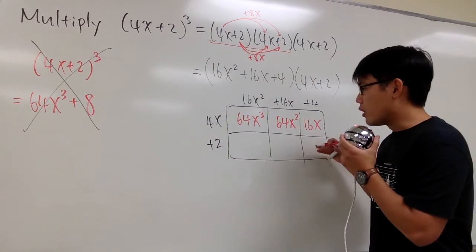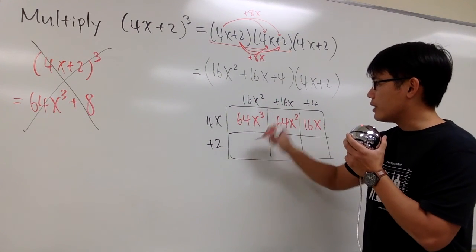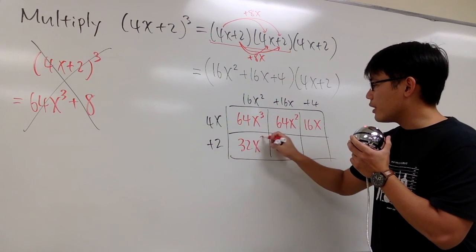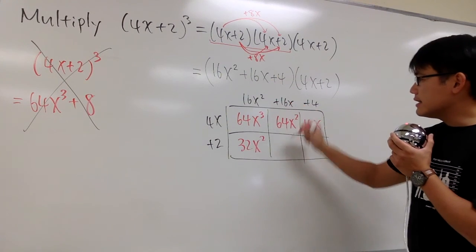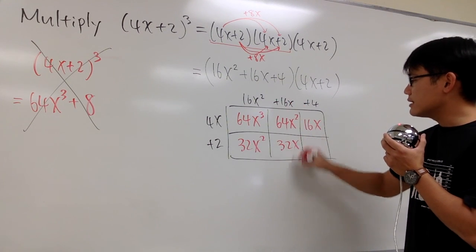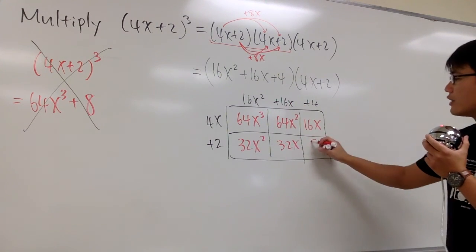And now let's do the bottom row, 2 times 16x squared, we have 32x squared, 2 times 16x, that's positive 32x, 2 times 4, that will give us 8.